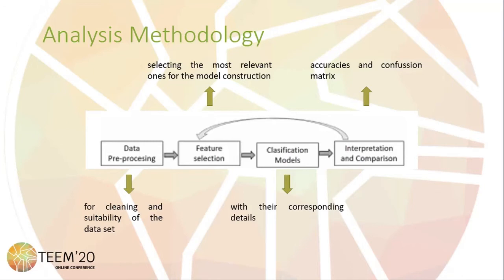Third, classification models: the R-part classification and regression algorithm has been parametrized and fed with the corresponding most relevant attributes in order to predict the dropout target variable. As the target variable is discrete, the algorithm acts as a subclassifier. Fourth, interpretation: for different faculties, different outcomes with different confusion matrices are achieved by the predictive models obtained in the third phase.